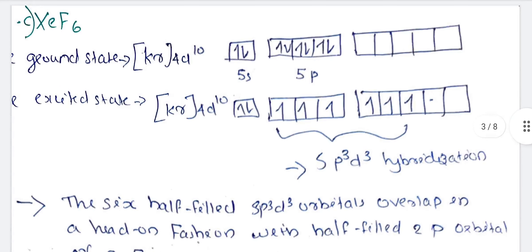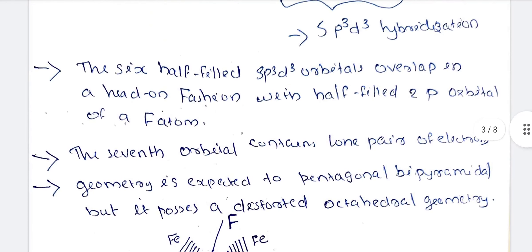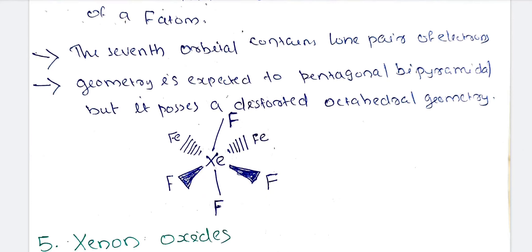Next is XeF6, Xenon hexafluoride. The ground state is [Kr]4d10 5s2 5p6. In the excited state, 3 p orbitals and 3 d orbitals are involved. This gives sp3d3 hybridization. The sp3d3 hybridization overlaps in head-on fashion with the half-filled 2p orbitals of F atom.